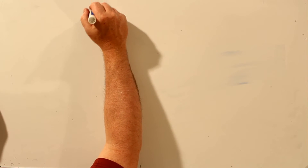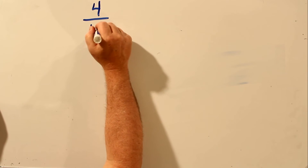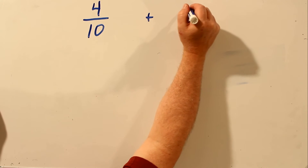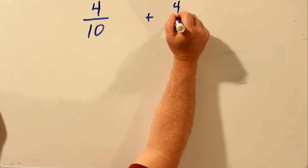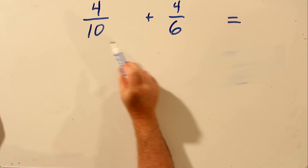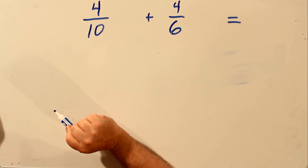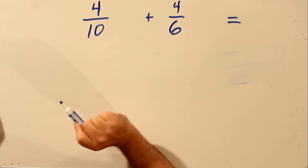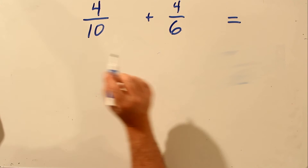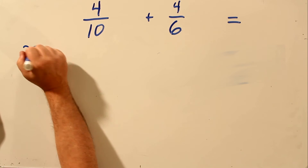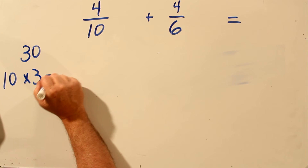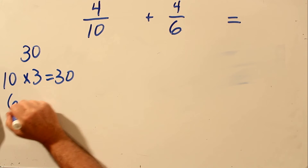Let's add 4 over 10 and 4 over 6. In order to add these two fractions, the bottom number first has to be the same. In order to make the bottom numbers the same, we must first find the lowest common multiple of 10 and 6. The lowest common multiple of 10 and 6 is 30. 10 times 3 is 30, and 6 times 5 is 30.